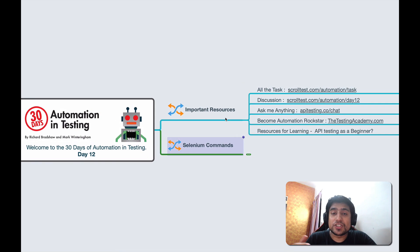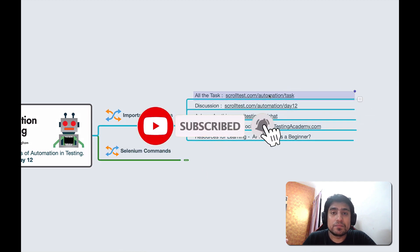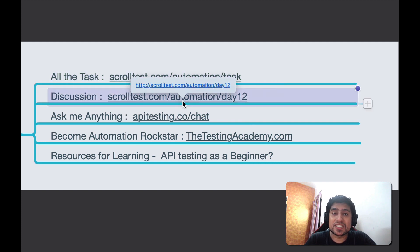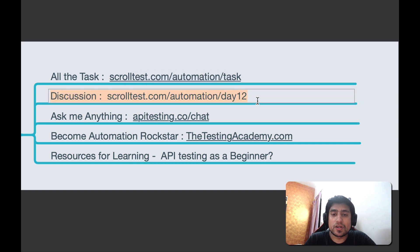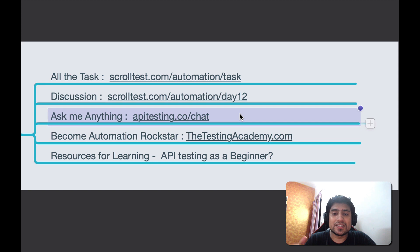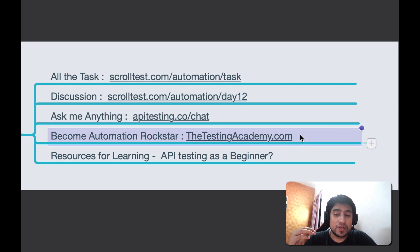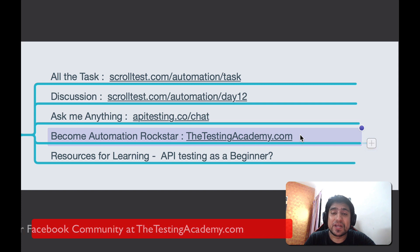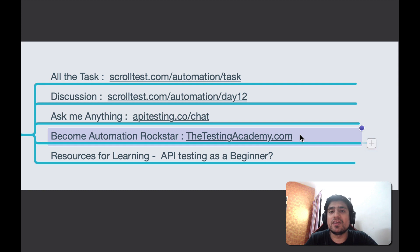Before starting, we are on a mission to learn automation testing in 30 days, and this is Day 12. If you want to see all the tasks, you can go to the URL provided. To download resources related to this video, go to the link in the description. To discuss anything with me, go to apitesting.co/chat. We also have 1,200-plus members in the software testing community at testingacademy.com, where we discuss Selenium, API testing, and more.